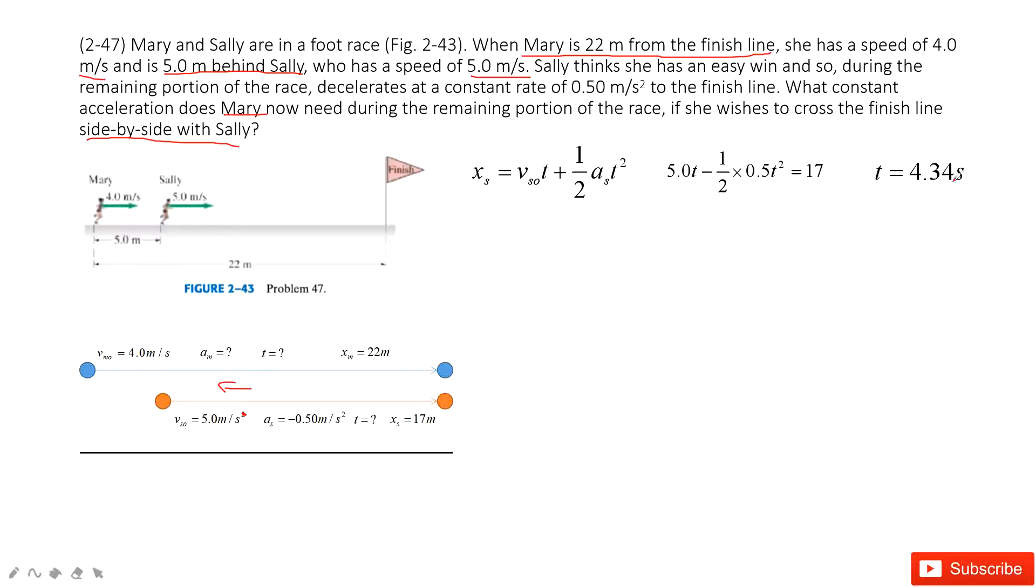When we input the known quantities, it's very easy to solve. The time taken is 4.34 seconds. That means if Sally moves this way and keeps the initial velocity and acceleration of negative 0.5 meters per second squared, 4.34 seconds later Sally will arrive at the finish line.